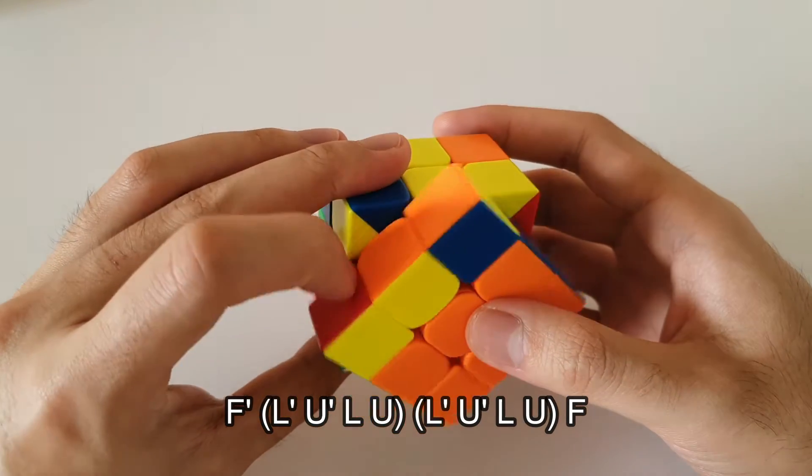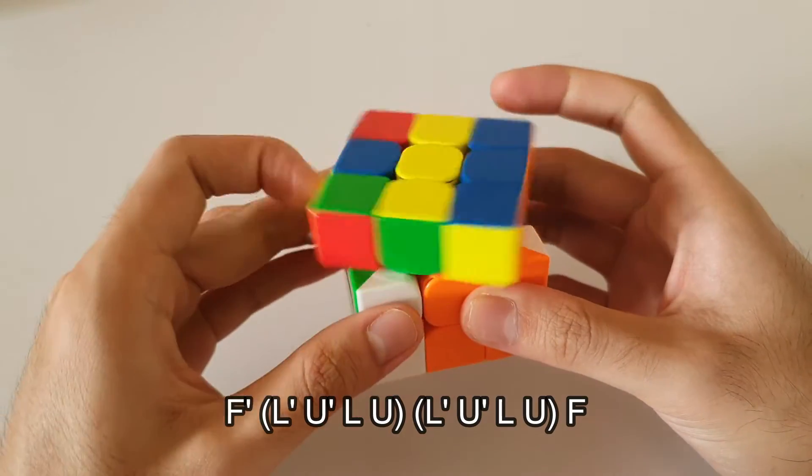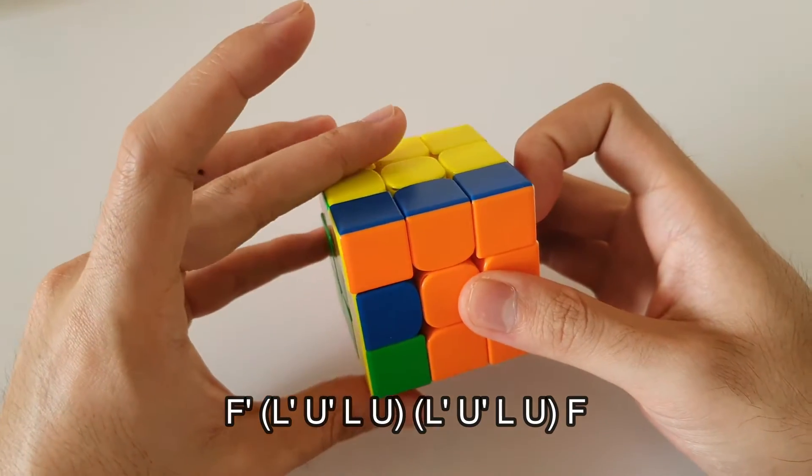So the algorithm will go like this. It starts off with an F prime followed by a lefty double sexy, and then finishing off with an F.